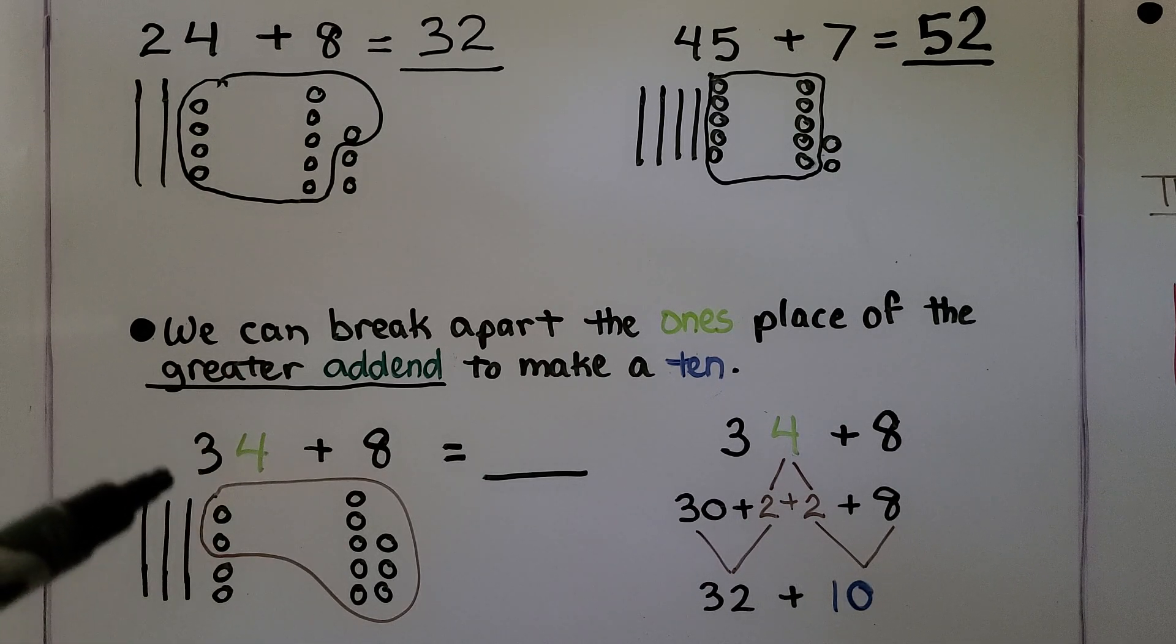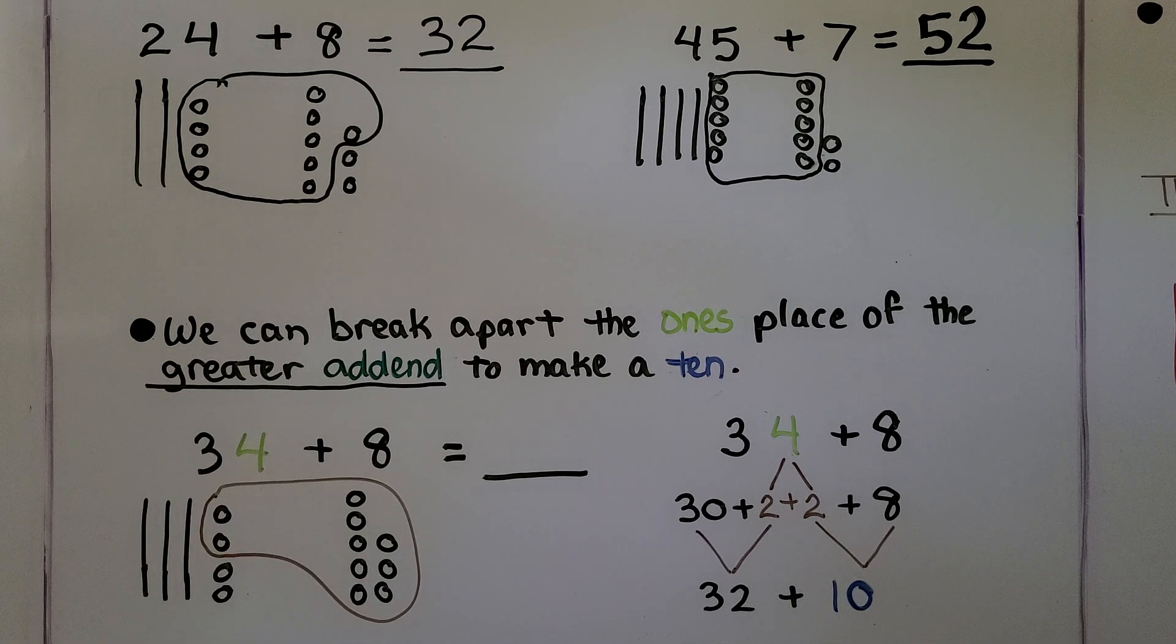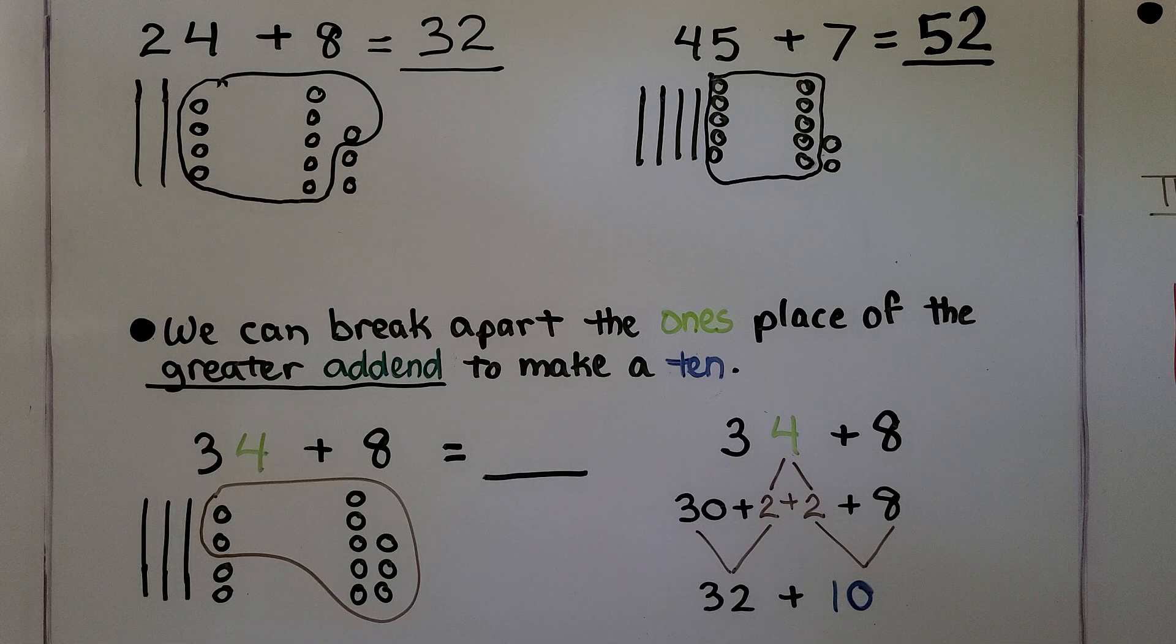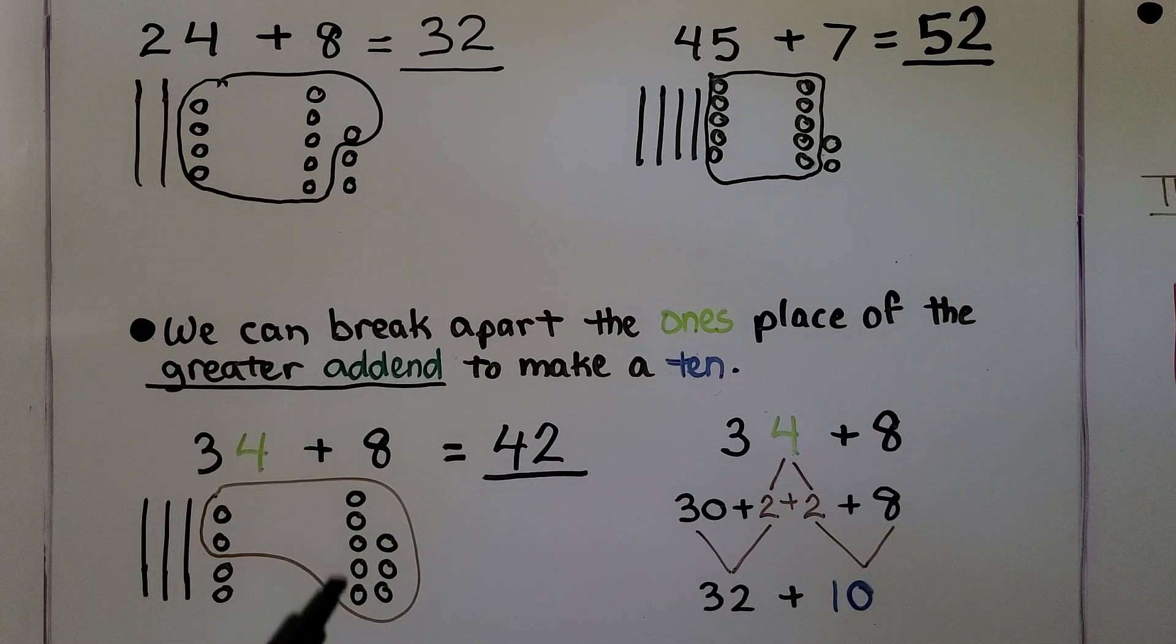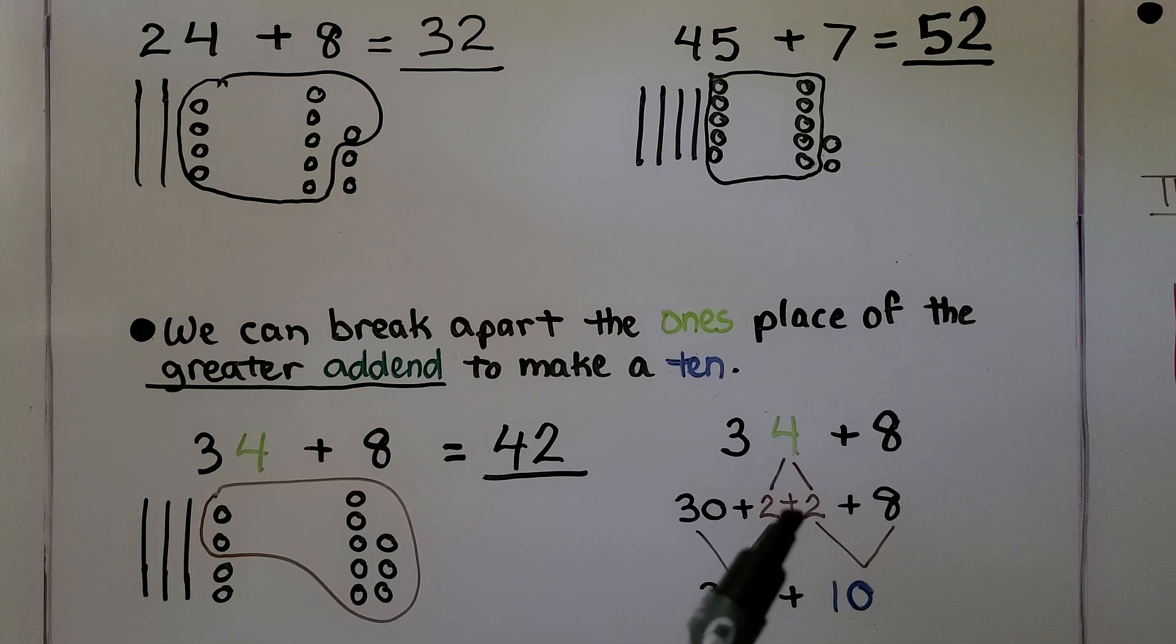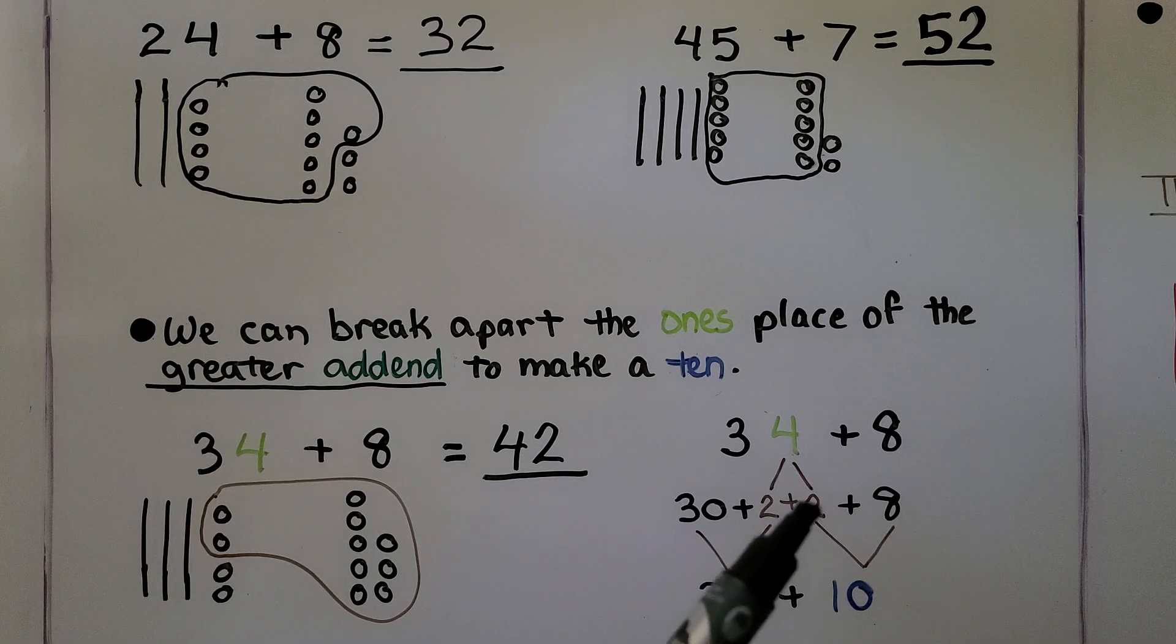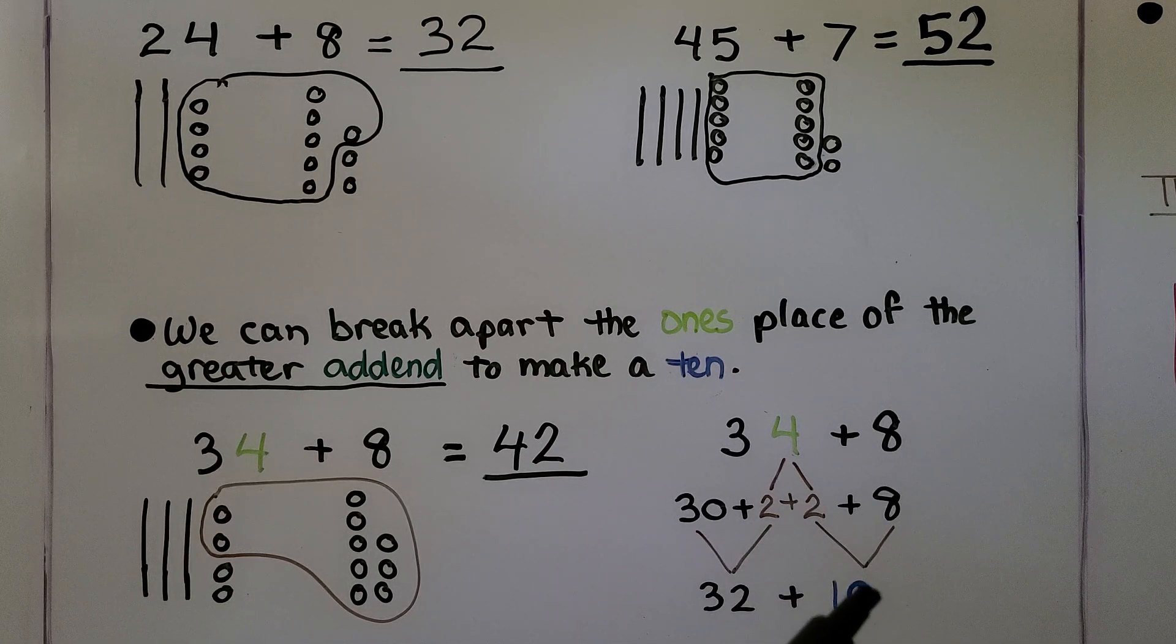Then we've got 1, 2, 3, 4 tens, 2 ones. What we're doing is we're asking ourselves what this 8 needs to be a ten, and it needs 2. So we break the 4 into a 2 plus 2. We do 2 plus 8 to make a ten.